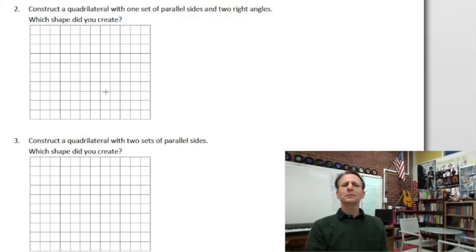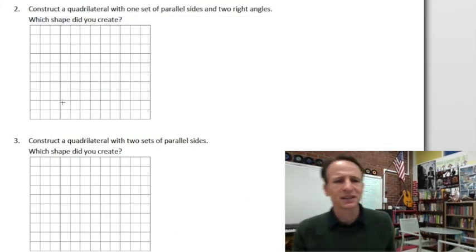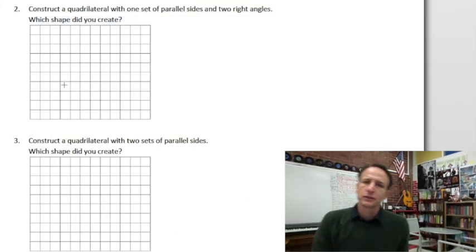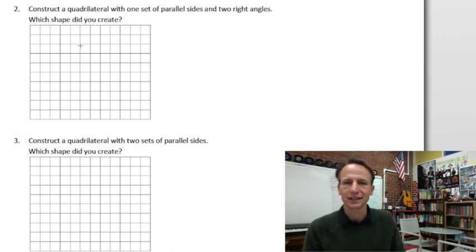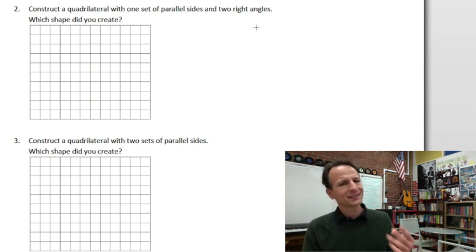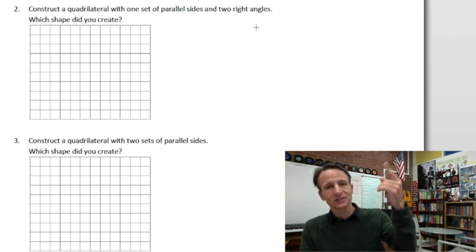Number two is a bit of a conundrum, and honestly I would criticize our Eureka mathematicians on this one because the definition is rather nebulous, a little cloudy and indistinct. We're to construct a quadrilateral with one set of parallel sides and two right angles. Now it doesn't say only one set of parallel sides and doesn't say only two right angles, which would actually fit the definition of the trapezoid.